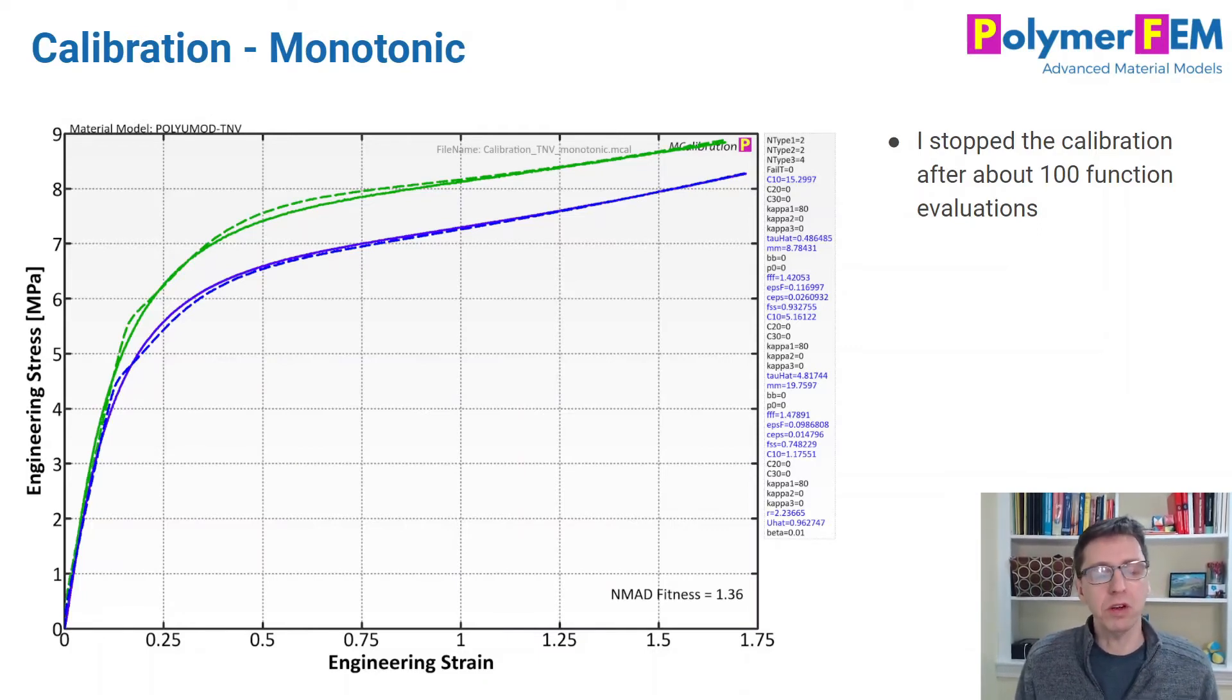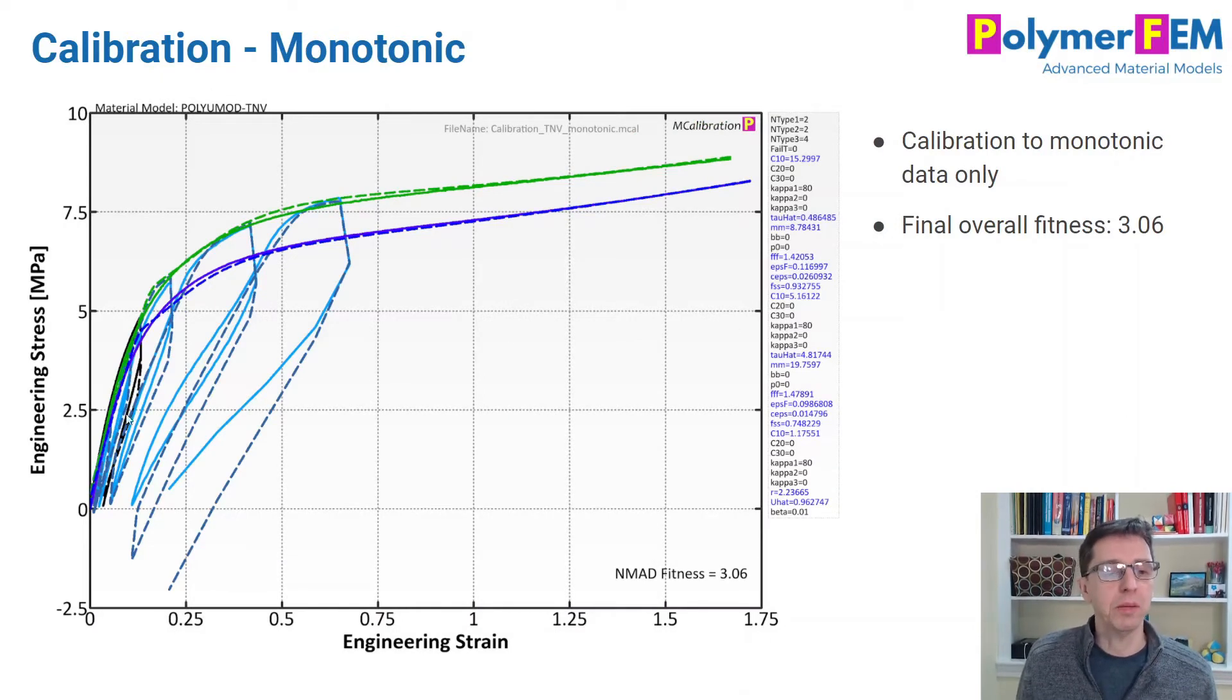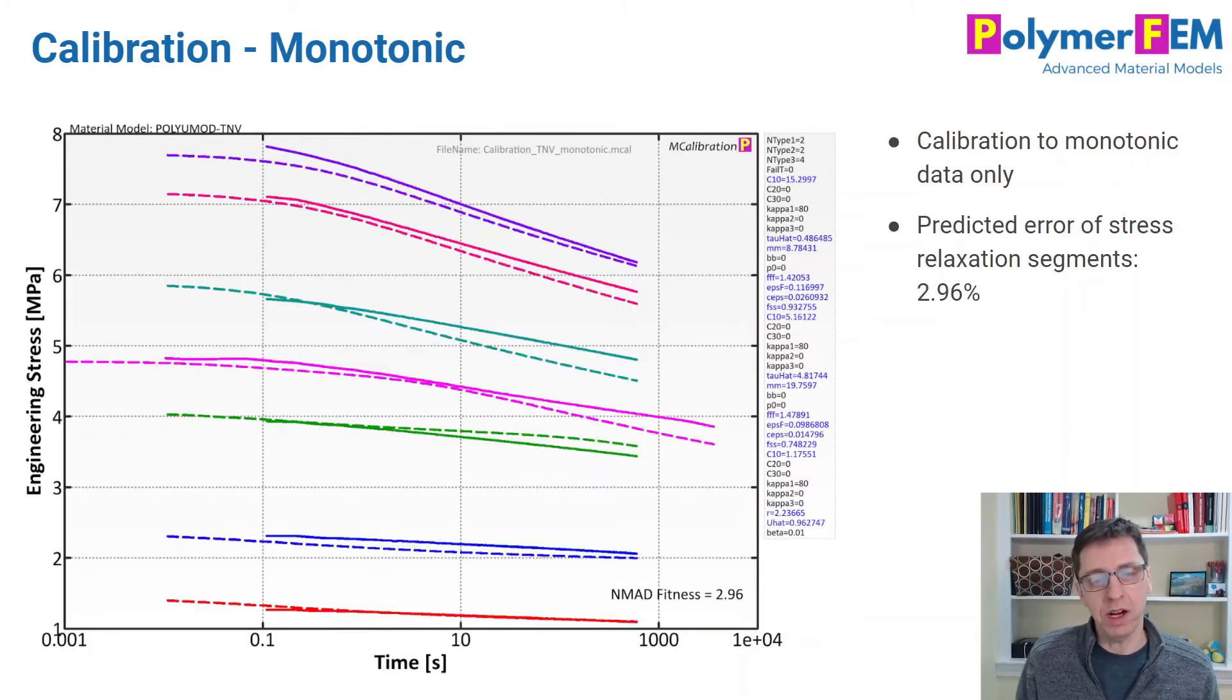If I then turn on in MCalibration the four main load cases that we had and compare the predictions that we calibrated earlier to that, we'll see the predictions look actually reasonably good. I was a little surprised to see how well this worked. The green and blue were the calibrations, and these down here are the results for situations we didn't really have data for. The error was 3.06%, not too bad. Only two tension tests and you get all of this. I was kind of impressed.